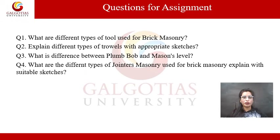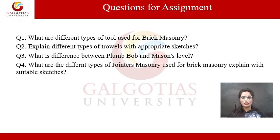There are four questions related to this lecture. Question one: what are the different types of tools used for brick masonry? Question two: explain different types of trowel with appropriate sketches. Question three: what is the difference between a plumb bob and the mason level? Question four: what are the different types of jointer used for brick masonry — explain with suitable sketches. You have to solve all these questions.